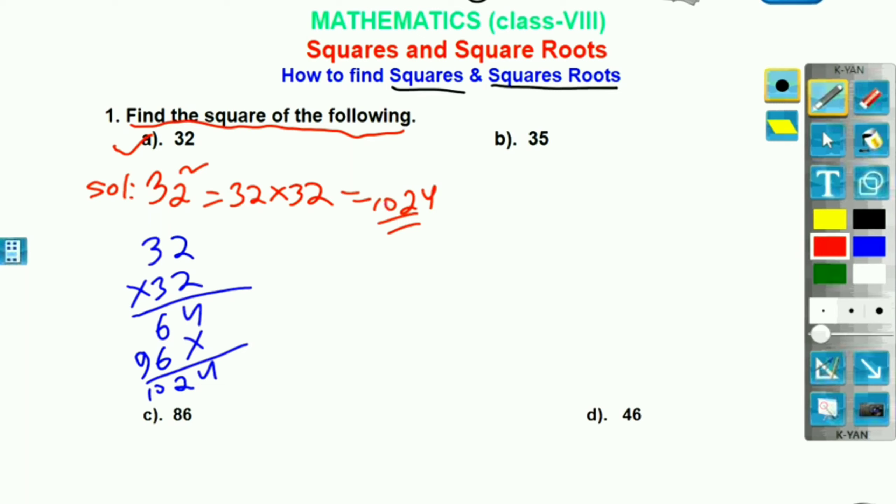Similarly, B. So, B I am going to square. Solution. In the same way, 35 square. 35 into 35. I am going to multiply 35 by 35.